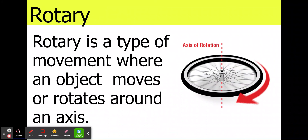Rotary. Rotary is a type of movement where an object moves or rotates around an axis. Here we can see an animation of a wheel moving around an axis, and that movement is rotary movement.